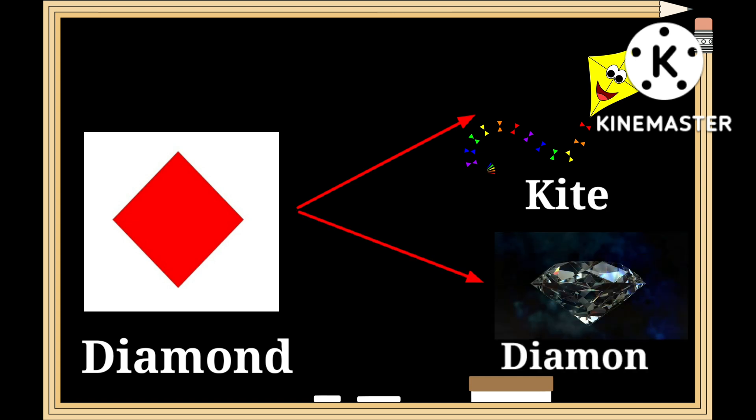This is a shape of a diamond — d-i-a-m-o-n-d. As you can see, the shape of a kite and a diamond gemstone are similar to that of the diamond shape.